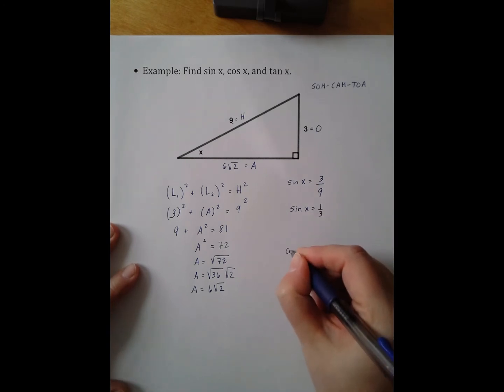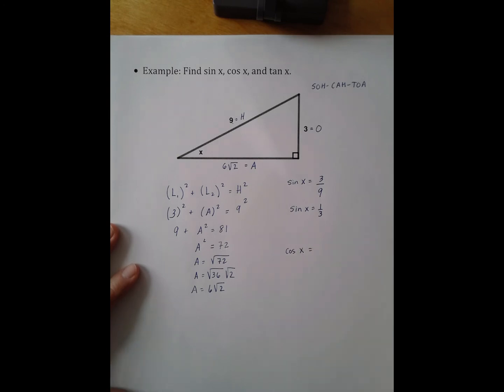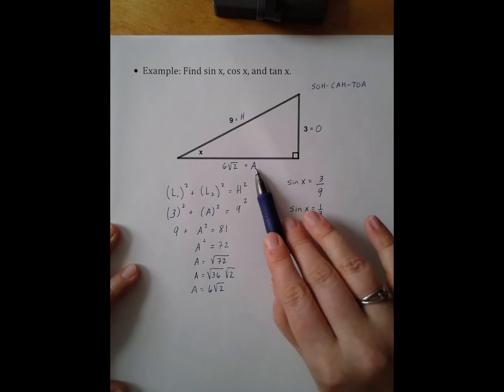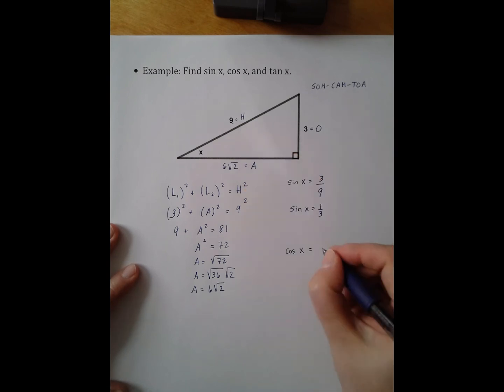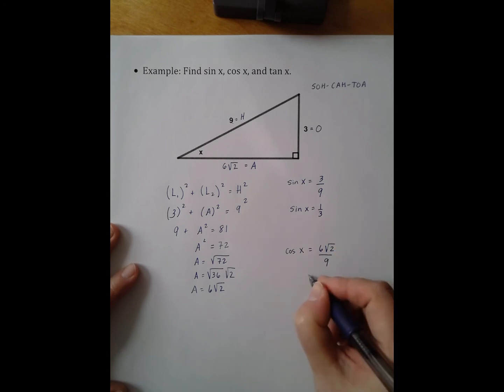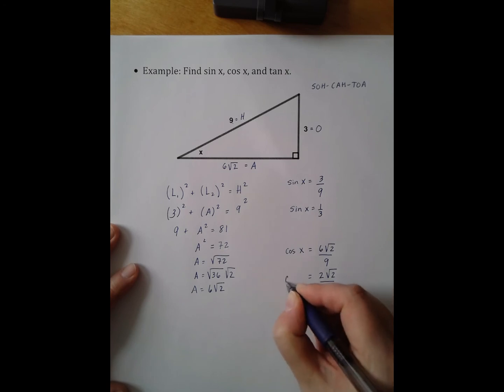I'm then now going to find cosine of X. Cosine of X is CAH, so adjacent over hypotenuse. So 6 square root of 2 over 9, and that can be reduced to be 2 root 2 over 3.